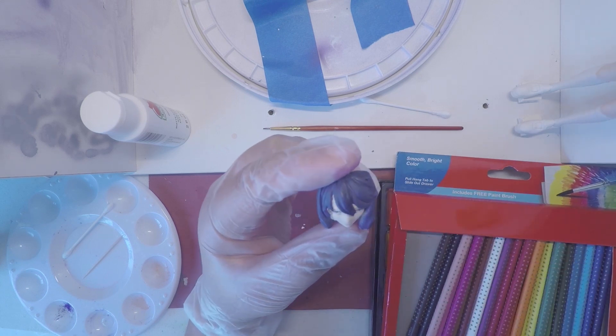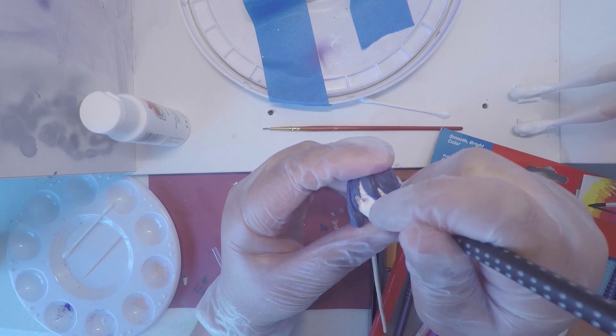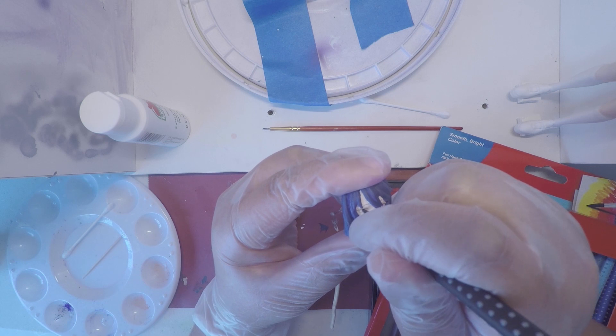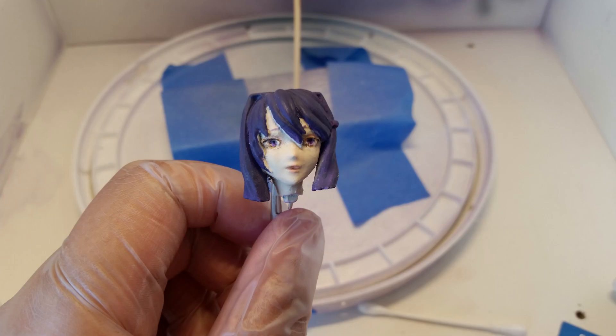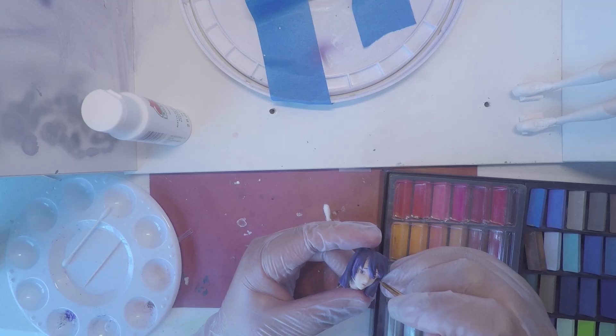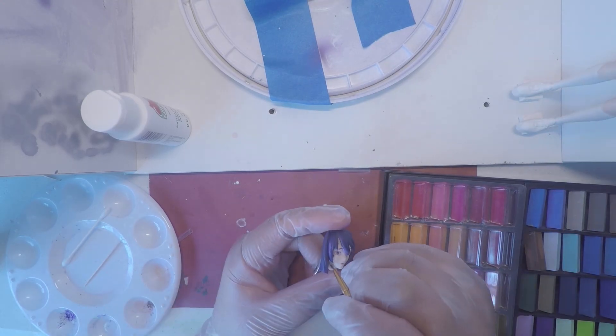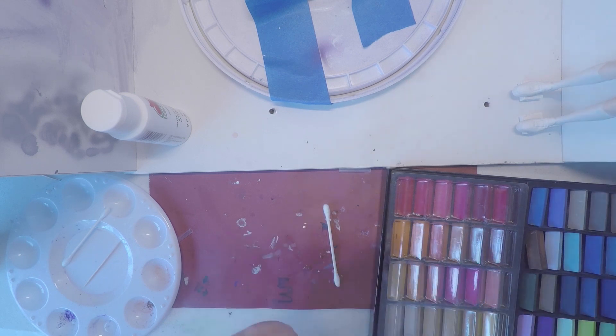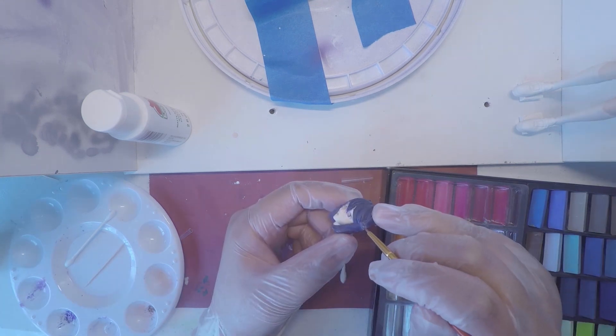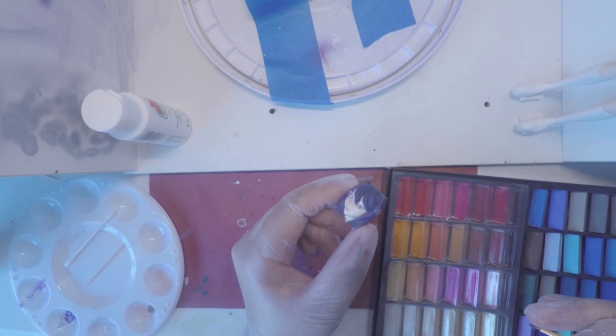Then I went in with a black pencil to retrace the outline of Yuri's eyes and make the tops of her pupils a bit darker. As a final touch to Yuri's face, I added some subtle blushing to her cheeks and darkened the areas around her hair. I added some light purple pastels to Yuri's hair clip as well.